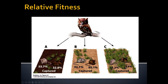Key component number two: we assign fitness based on the most fit phenotype. The most fit phenotype gets a fitness level of one — that's why we call it relative fitness. Everybody else gets a fitness level below one. In the dark-ground environment, dark-coated individuals would be assigned a fitness level of one. In the lighter-ground environment, light-coated individuals would be assigned a fitness level of one. All other individuals get a fitness level below one.